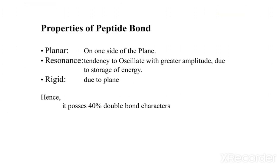Properties of peptide bond: it is planar — it lies on one side of a plane. The peptide bond has a resonance tendency to oscillate and vibrate with greater amplitude due to energy storage. Because of energy stored in the bond's formation, it vibrates or oscillates. The peptide bond also has rigidity due to its planar nature, and it possesses up to 40% double bond character.